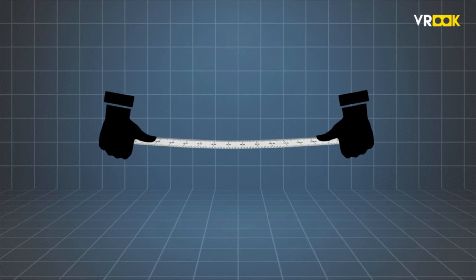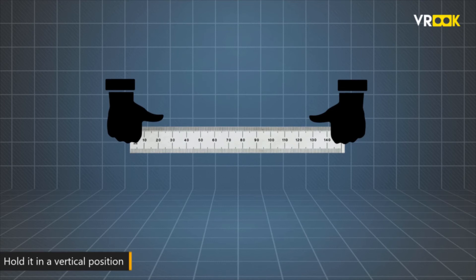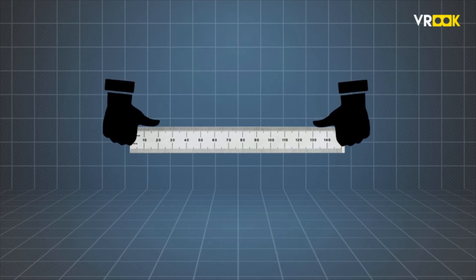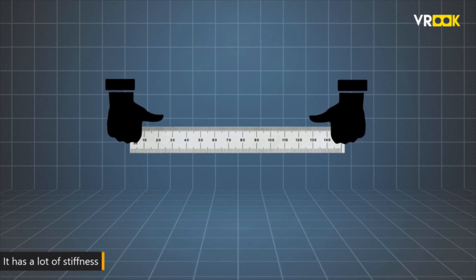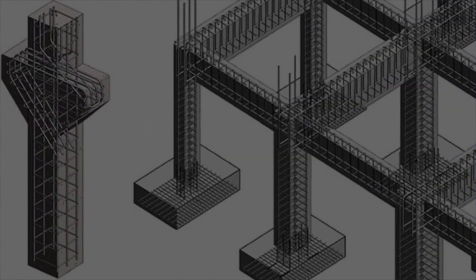Now I will change the orientation of the ruler and hold it in a vertical position. I have very less area to hold. Now, if I try to bend the ruler, it is almost impossible — it has a lot of stiffness. Though the ruler is the same in both cases, the shape of the ruler affected the stiffness. This stiffness is the area moment of inertia: the resistance to bending or deformation.